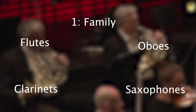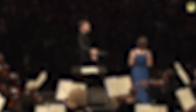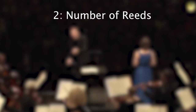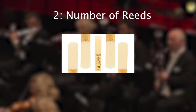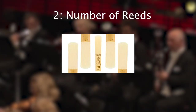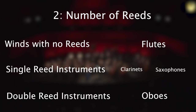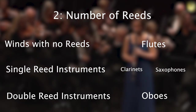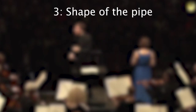Each family has similar tones, physical characteristics, and design shapes. The second method of categorization is by how the instruments produce tone, which normally focuses on how many reeds the instruments have. A reed is basically a flexible piece of material that vibrates when the player blows on it and produces tone. In this subcategory there are winds with no reeds, single reed instruments, and double reed instruments, all of which have very unique tones, timbre, and methods of playing.